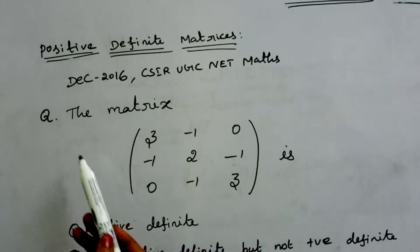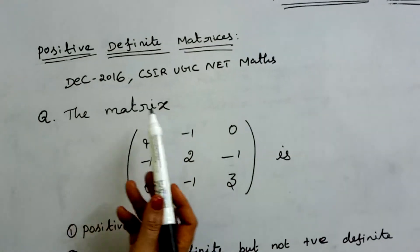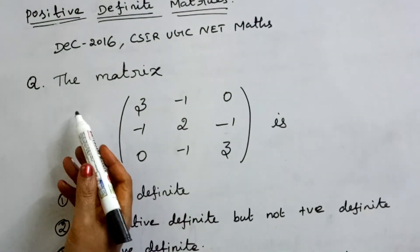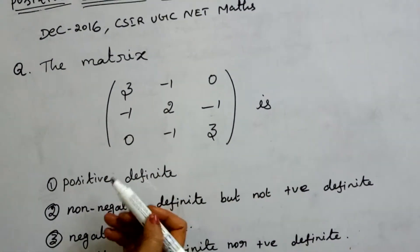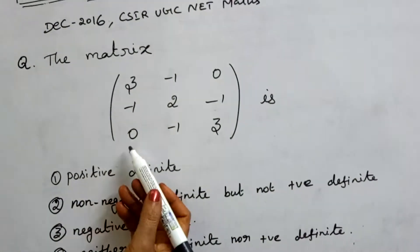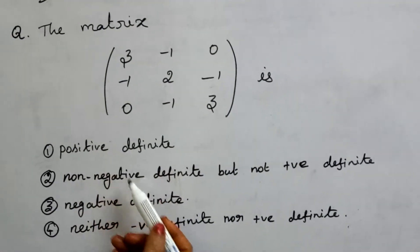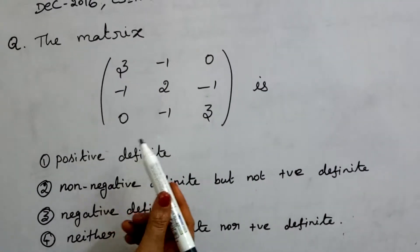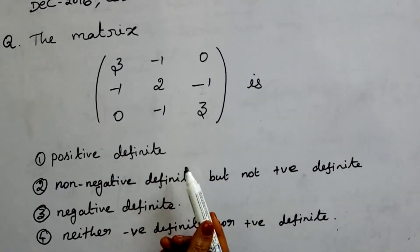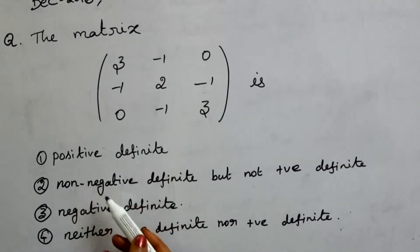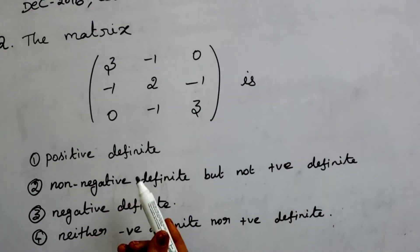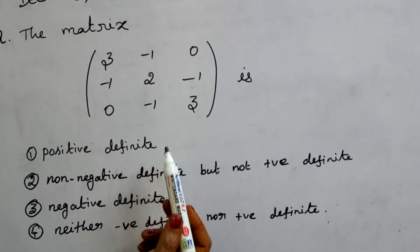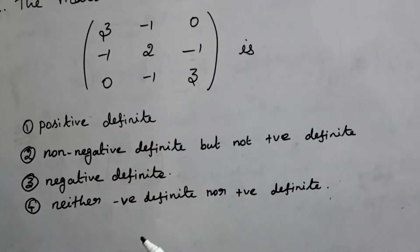Next question: December 2016, CSIR UGC NET Exam. There is one given matrix with 4 options. We need to determine what property the given matrix satisfies. This is a 3-mark question. We will check whether the matrix is positive definite.